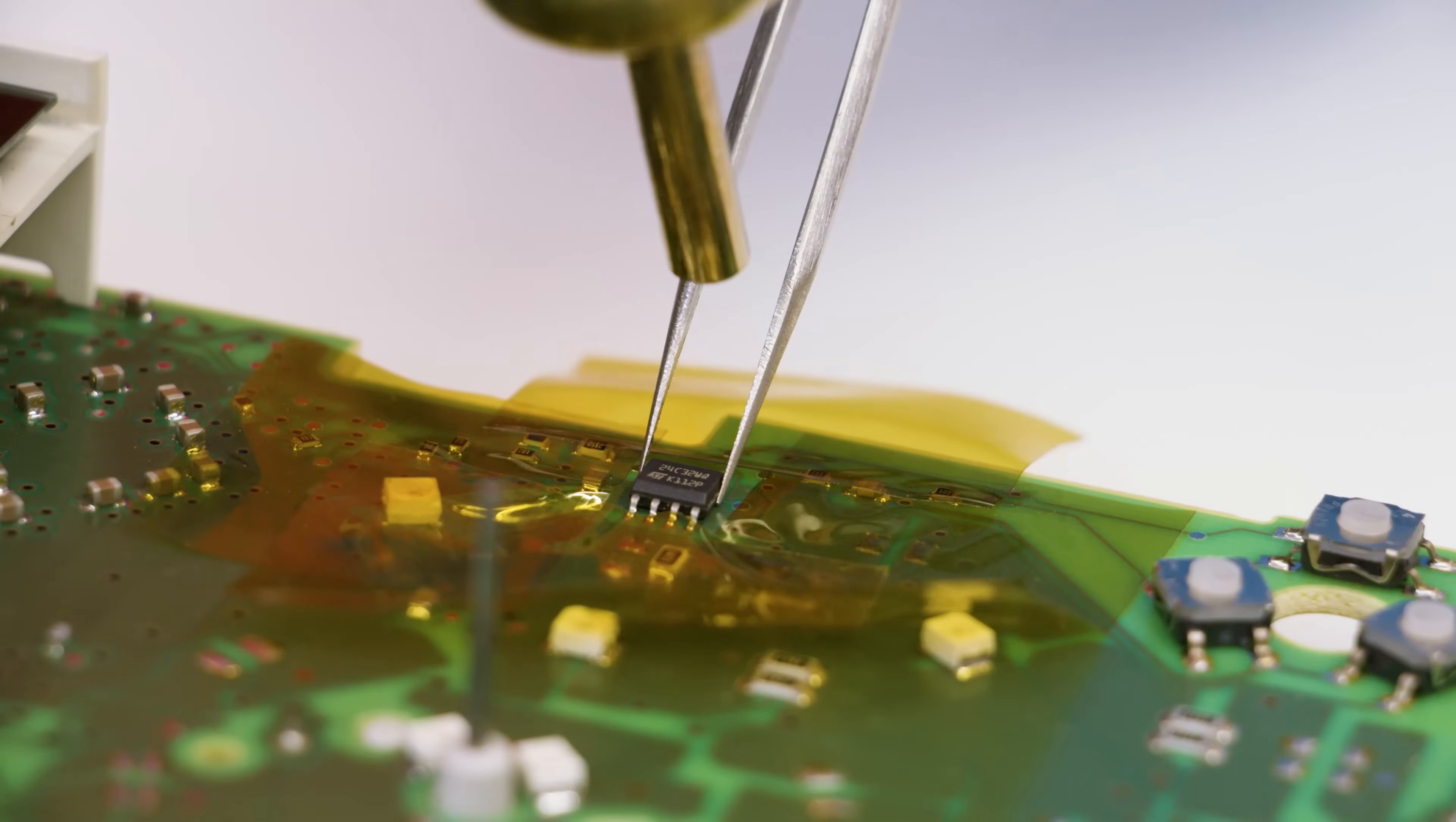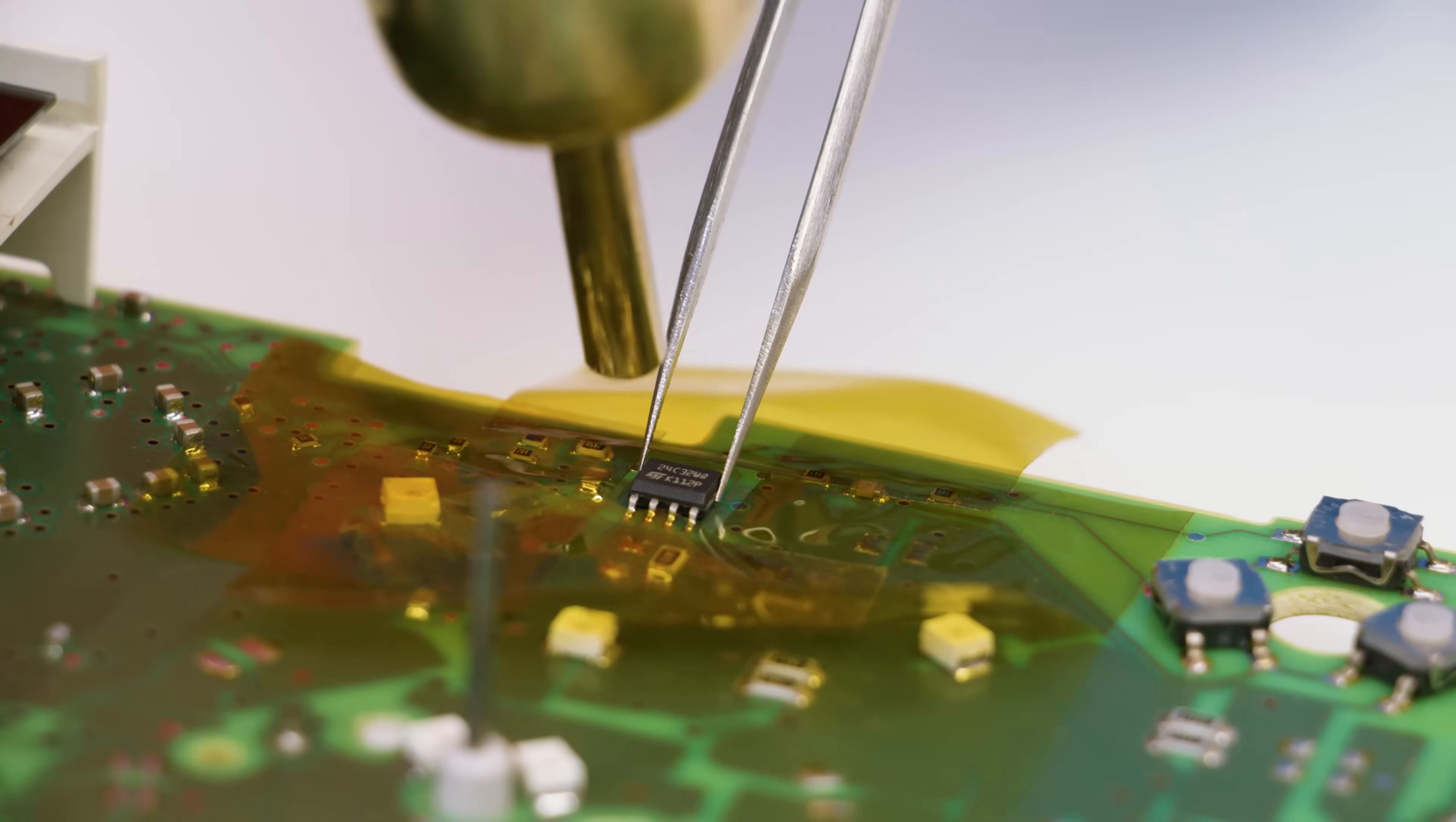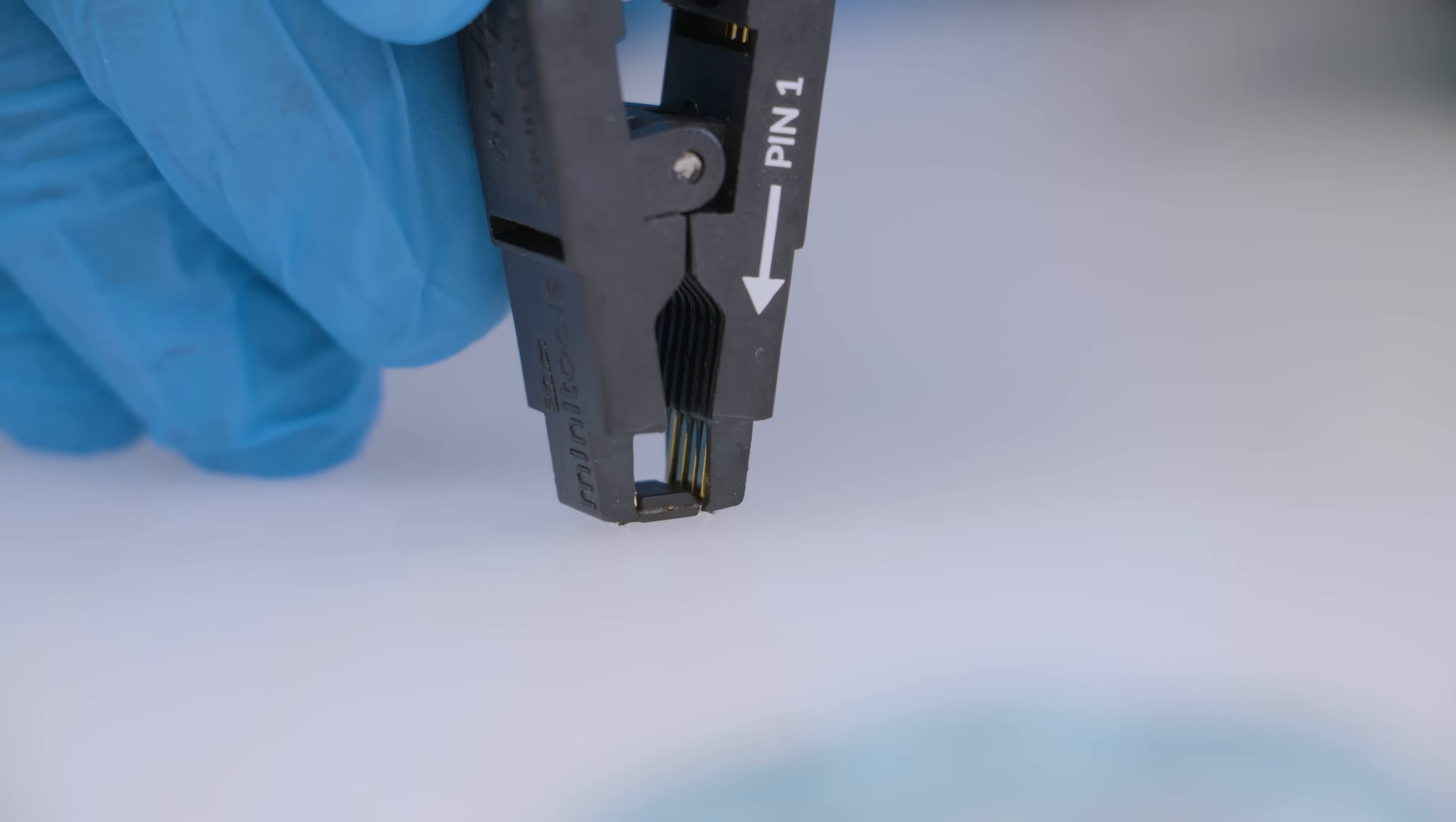With a hot air desoldering iron, desolder the EEPROM with the head of the tweezers. Clip the EEPROM, connecting it to the programmer.